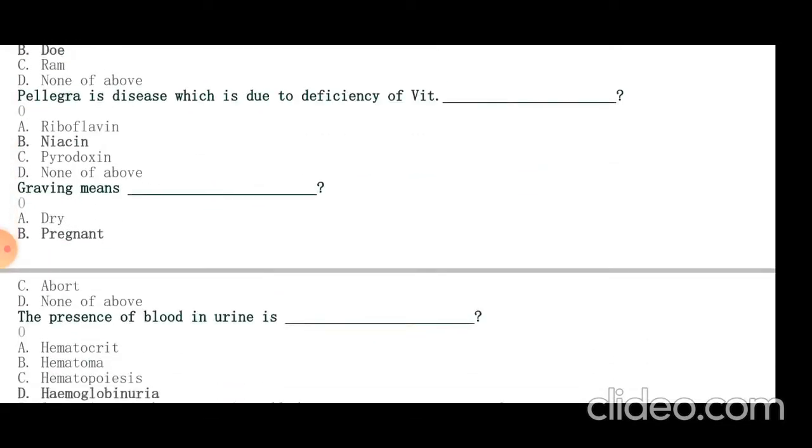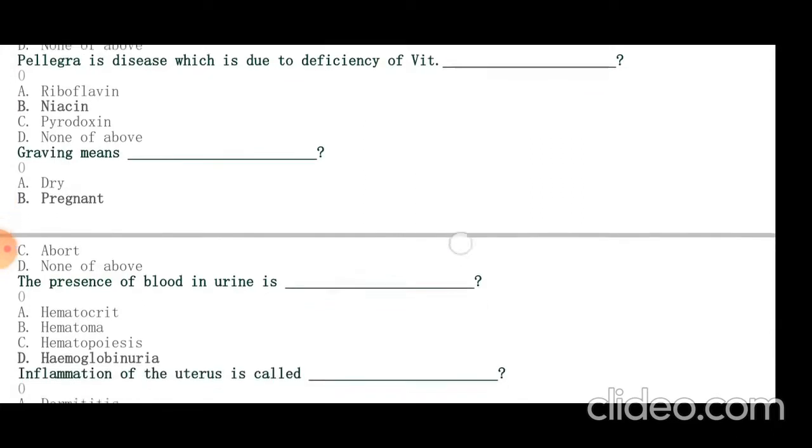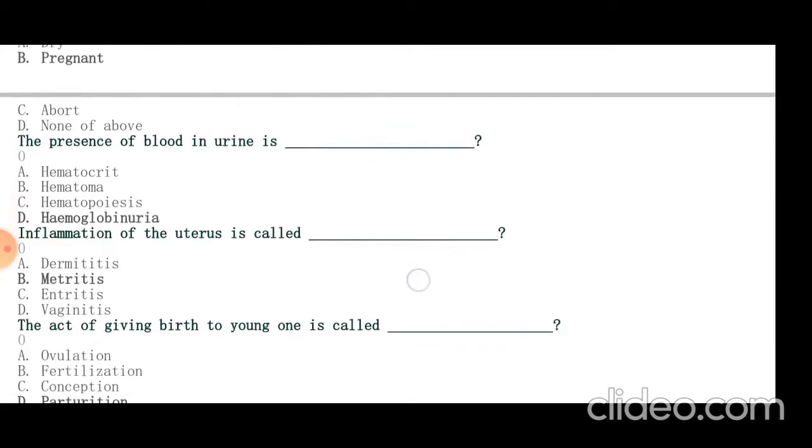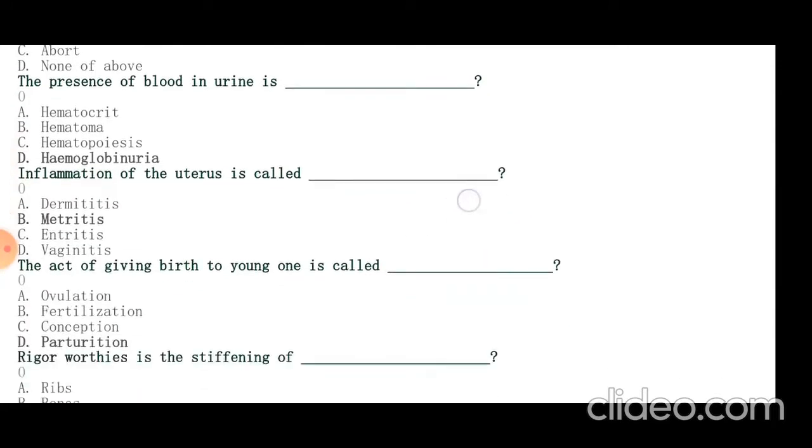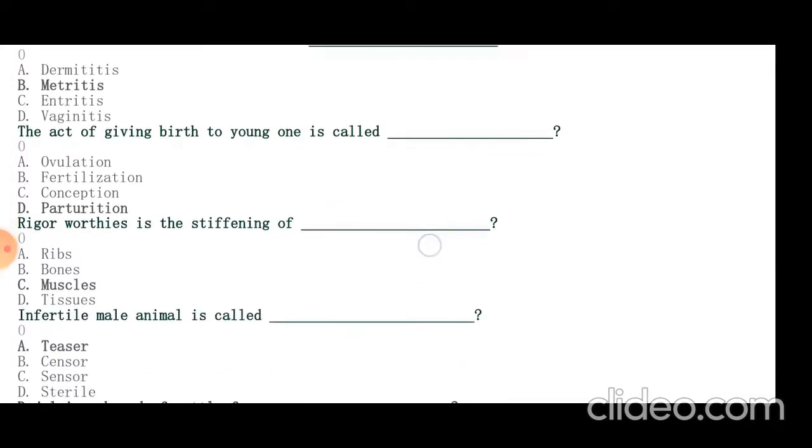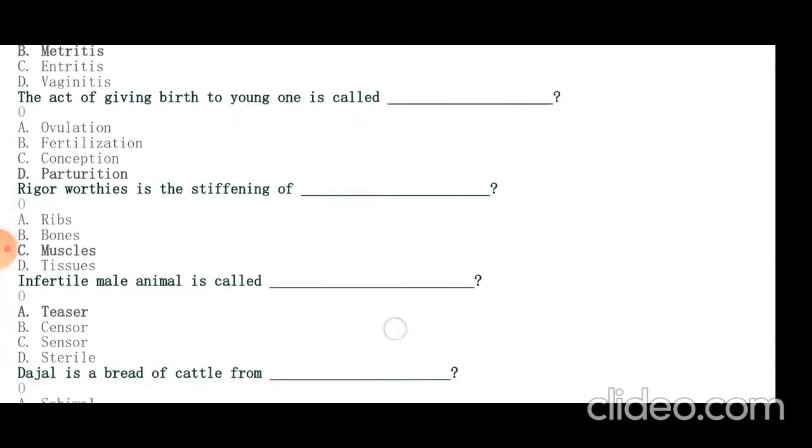Gravid means pregnancy. The presence of blood in urine is hemoglobinuria. Inflammation of uterus is called metritis. Act of giving birth to young one is called parturition. Rigor mortis is the stiffening of muscles. Infertile male animal is called teaser.